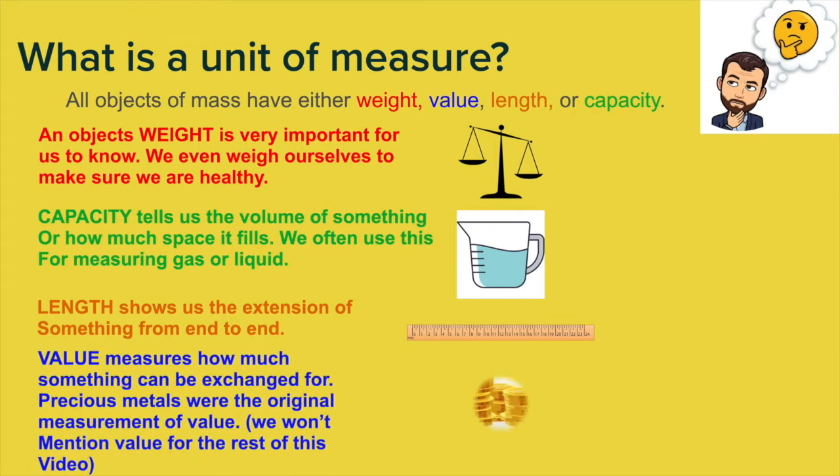Finally, value measures how much something can be exchanged for. So if you have some apples and somebody else wants your apples, then you need to exchange it for something. We usually do that with money. Originally, precious metals were the measurement of value, so it's a very important measurement. However, we're not really going to go into that during this video because, as we know, every country has different currencies and values. They all basically work on a base 10 system. So we're not going to talk about value, but we are going to talk about weight, capacity, and length.